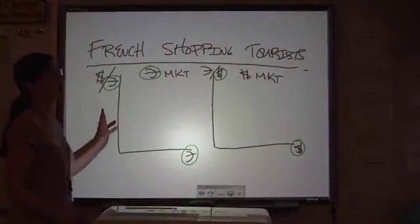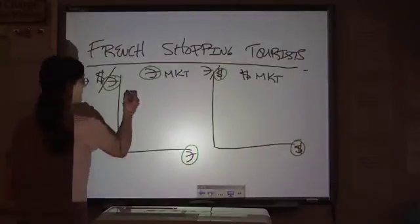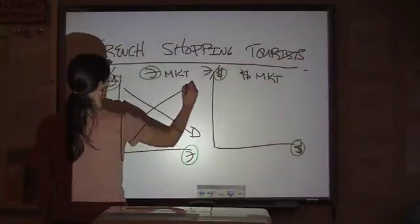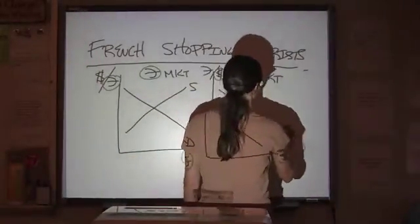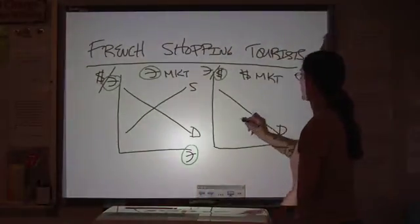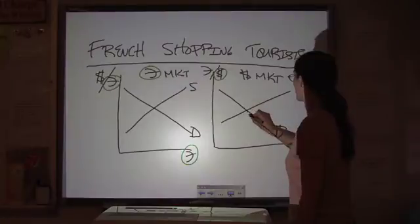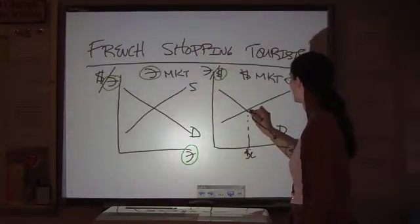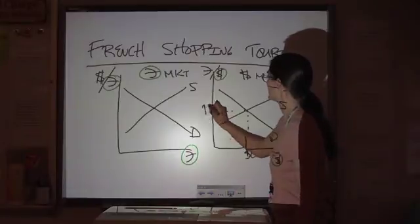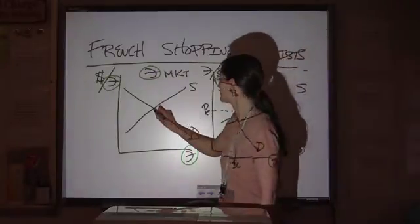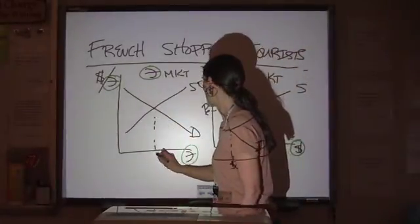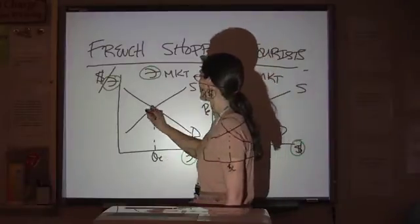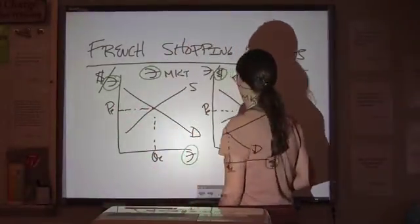Now, in terms of supply and demand, just your basic graphs. Demand, supply, demand. They don't have to have the same shape. Supply, put in your equilibrium. That's your price. You can even call this quantity equilibrium, and that's your price.